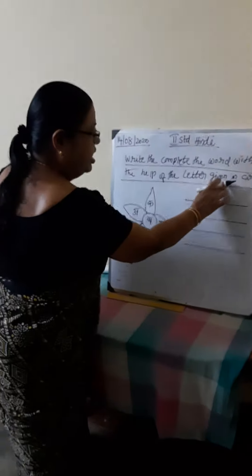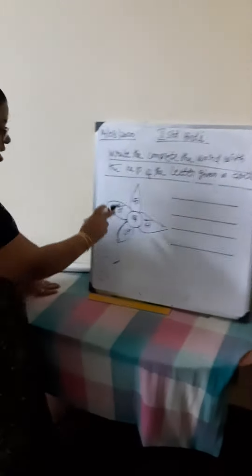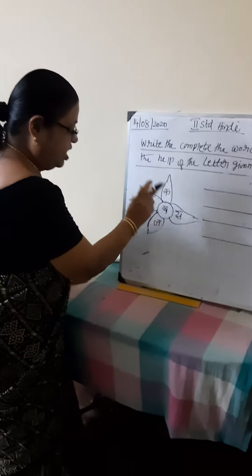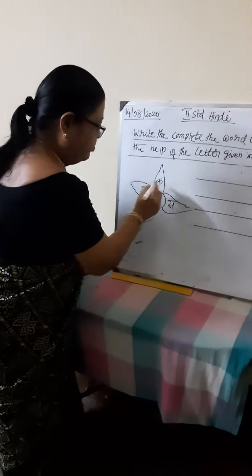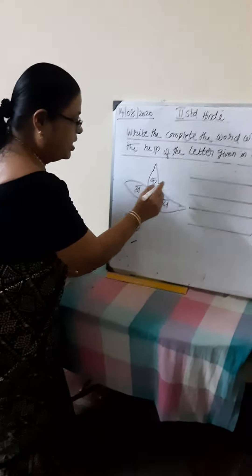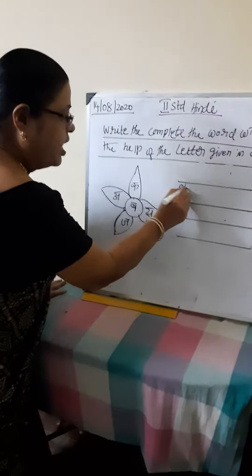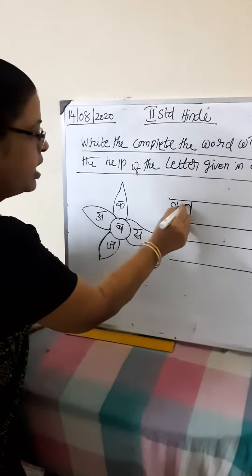Namaste Batche. Today we are going to learn to write a complete word with the help of the letter given in circle. What letter is given? We have to make one small word.